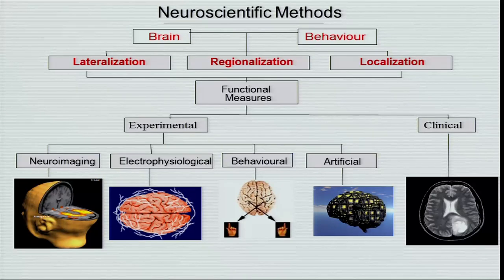The regionalization model is slightly different from the localization model. While localization says how one part of the brain is related to one kind of function, the regionalization concept tells that different regions of the brain may be responsible for one kind of behavior, or several behaviors may be located in one part of the brain. In the regionalization model, we try to understand what are the different regions that get activated when a mental function occurs. Localization is primarily utilized in brain damage cases, making an inference between a cognitive behavior and a particular impairment, while regionalization deals primarily with intact brain subjects.